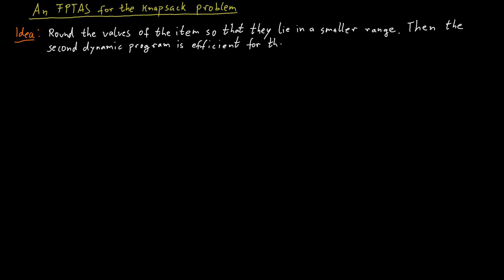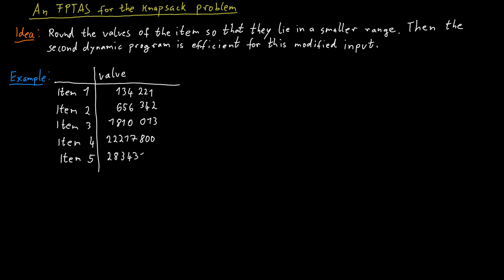So here's a simple example. Suppose you have a bunch of items, like five items, and they have values that are quite big. Say the first item has value 134,221, and the second item has values 656,342, and so on. What we now do is round those values up to the next multiple of 100,000. So the first item would now have value 200,000, and the second item would have values 700,000.